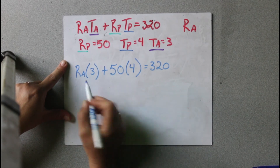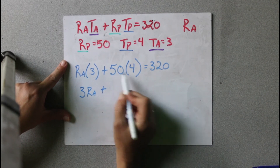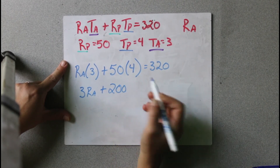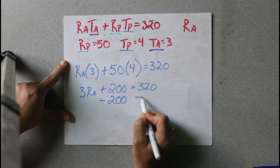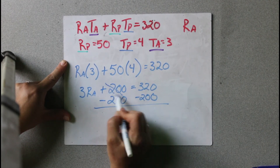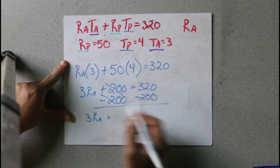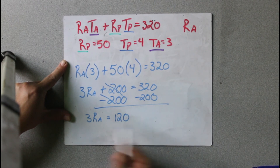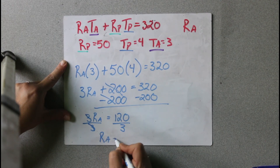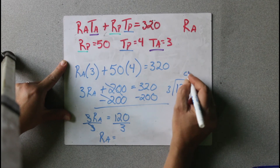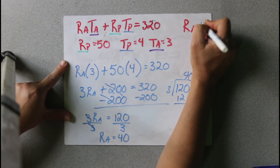Now we just have to solve for RA. 3 times RA would be 3RA, plus 4 times 50 would be 200, equals 320. Now we're going to subtract 200 on both sides. Those cancel and we get 3RA equals 120. Now we have to divide by 3. 3 times 4 is 12, so it would be 40. RA equals 40.